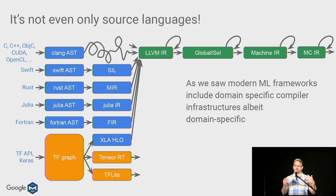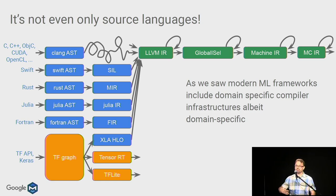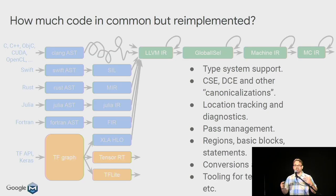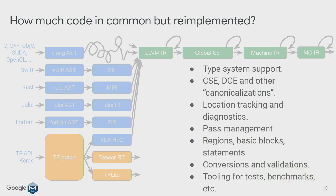The same pattern applies to modern ML frameworks. Looking at the TensorFlow graph — from its input representation to XLA-HLO to LLVM IR — we see a lot of common code being duplicated over and over: type system support, common optimization passes such as CSE and DCE, canonicalizations, location tracking and diagnostics that are inconsistently handled or dropped, and duplicated pass management. All the same basic concepts being reimplemented again and again.